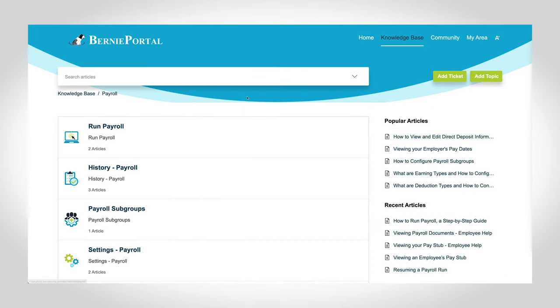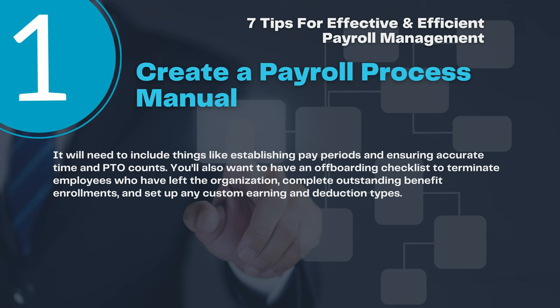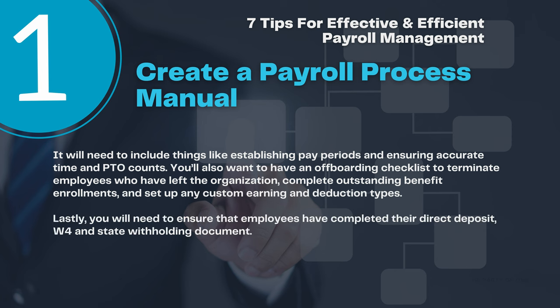For example, BerniePortal has a knowledge base with detailed articles about how to run payroll. It will need to include things like establishing pay periods and ensuring accurate time and PTO counts. You'll also want to have an offboarding checklist to terminate employees who have left the organization, complete outstanding benefit enrollments, and set up any custom earning and deduction types. Lastly, you'll need to ensure that employees have completed their direct deposit, W-4, and state withholding documents.